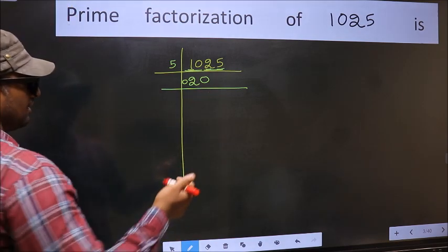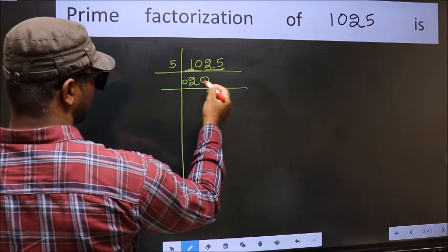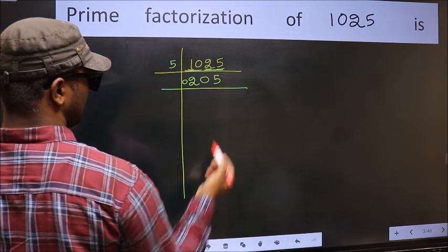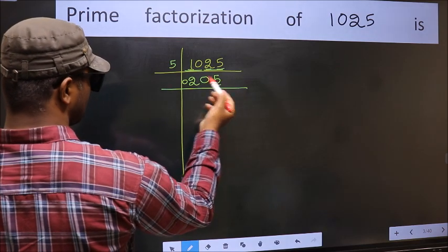Next. So, we have 25. When do we get 25 in 5 table? 5 5s, 25. Now, here we have 5, so take 5.